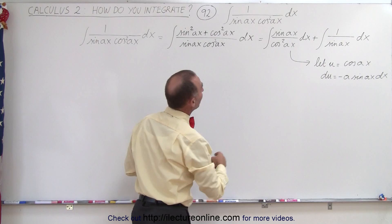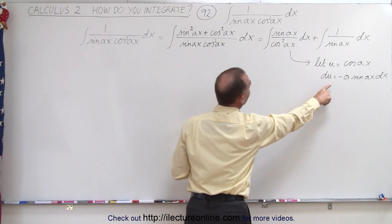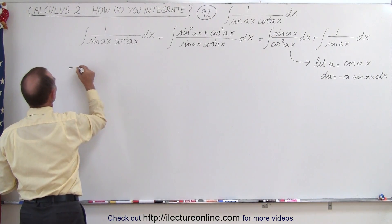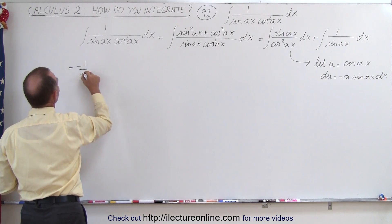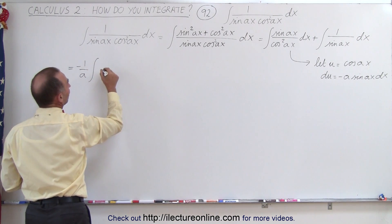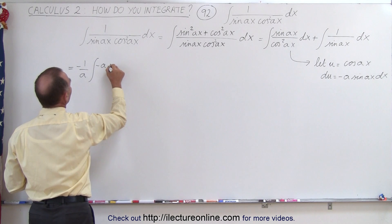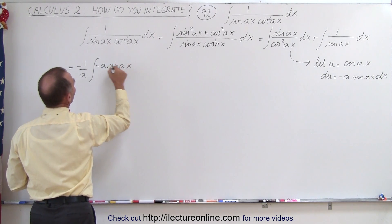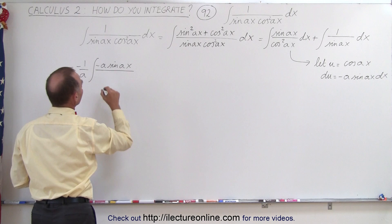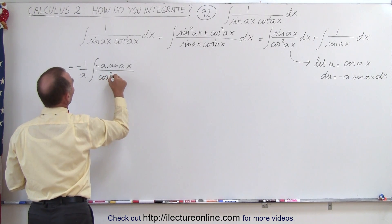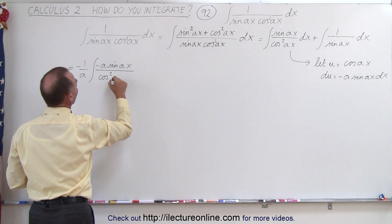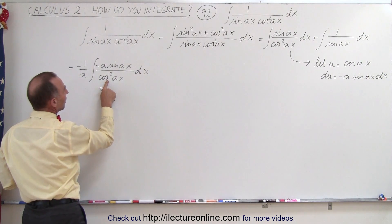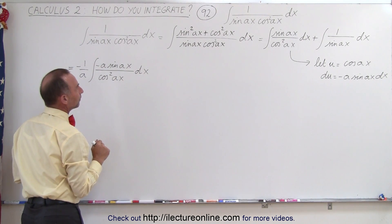So we can write that as follows — we want a minus A in the numerator — so that becomes equal to minus 1 over A times the integral of minus A times the sine of AX divided by the cosine squared of AX DX. Essentially, we have U squared in the denominator and DU in the numerator.